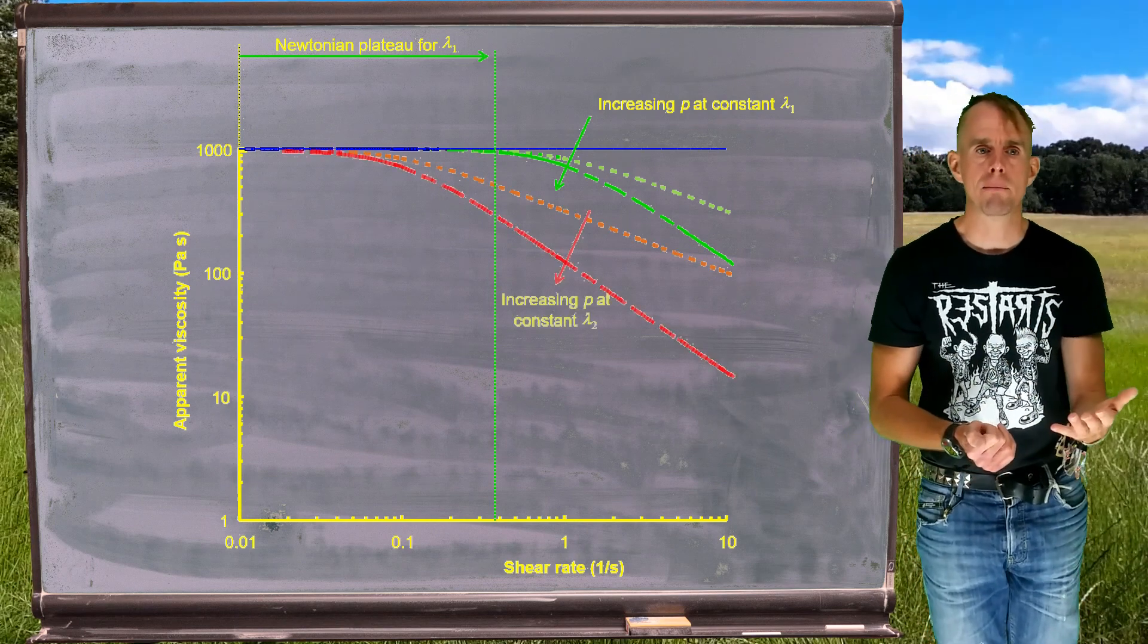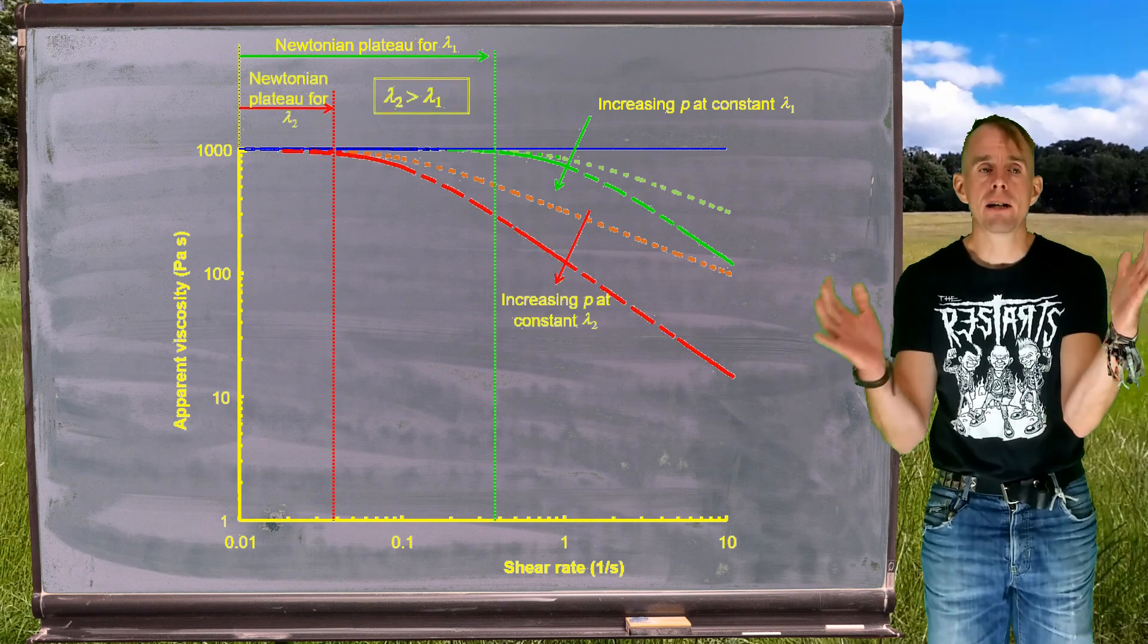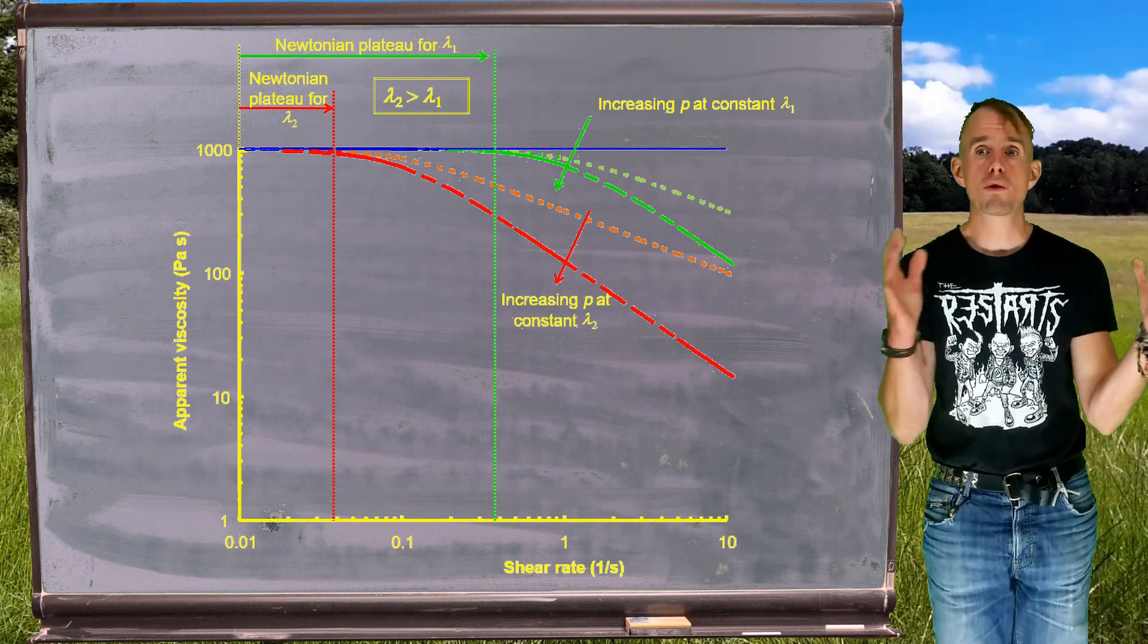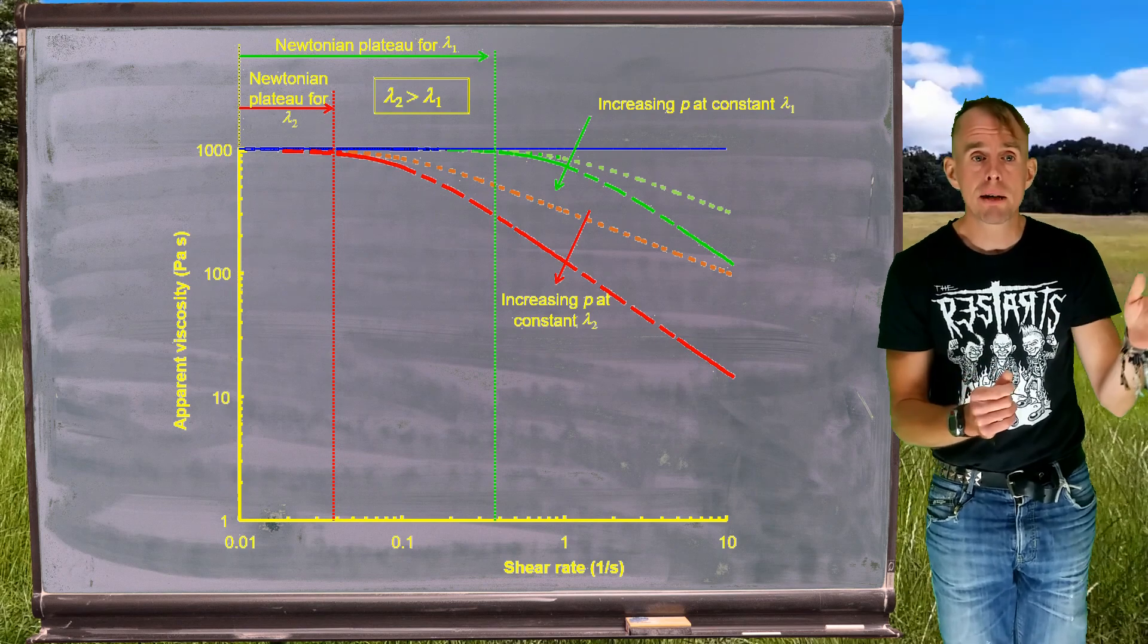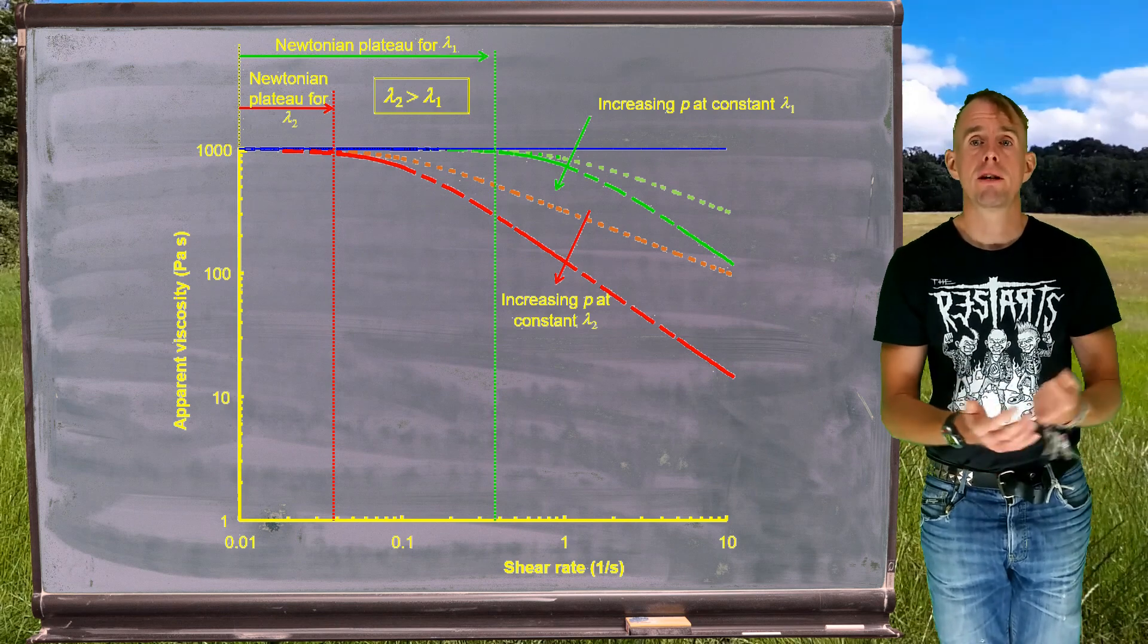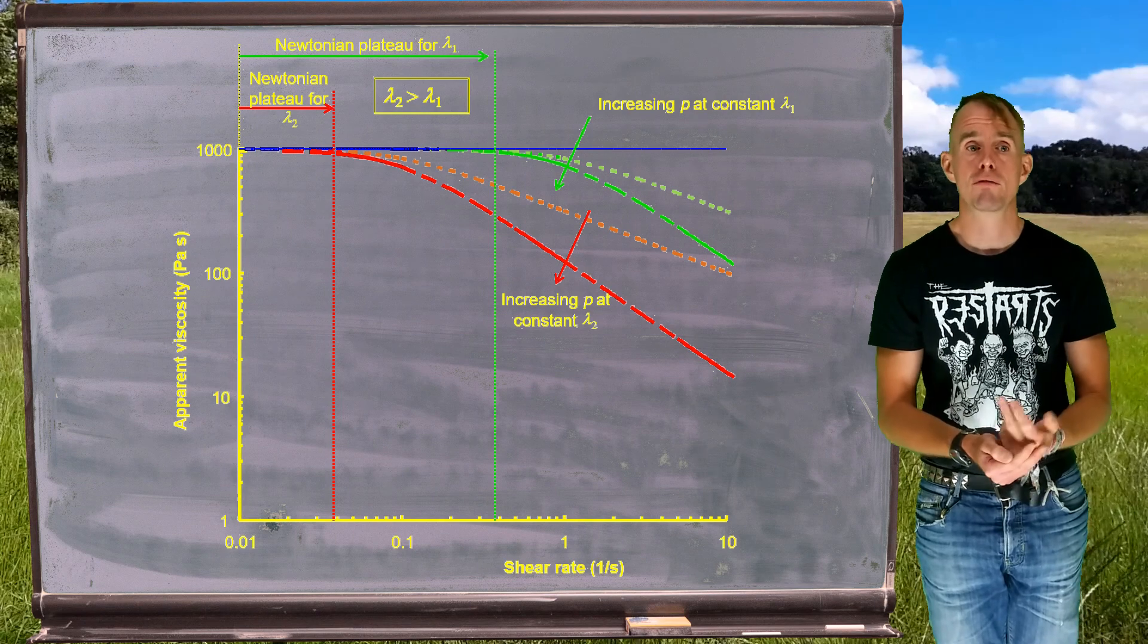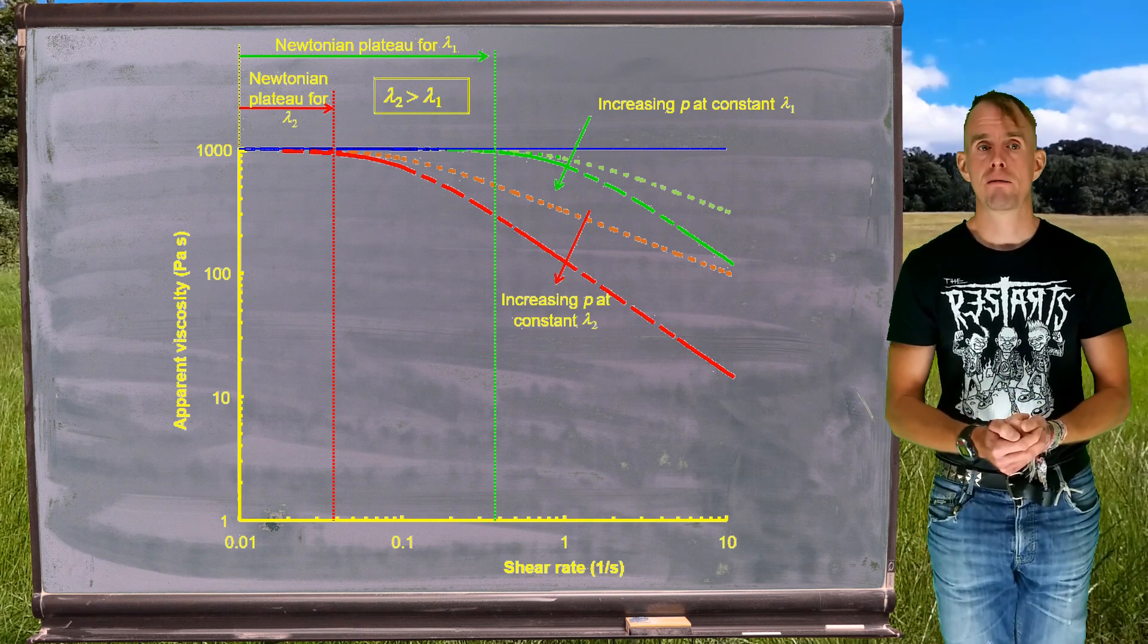Let's change some values here. Let's change lambda and see what happens. And we can see again that a lower value of lambda results in a shorter Newtonian plateau. As we increase p at constant lambda, again we get increasing shear thinning. So this is a very useful constitutive equation. It's now got three unknown parameters rather than two. And it is eminently fittable to experimental data.